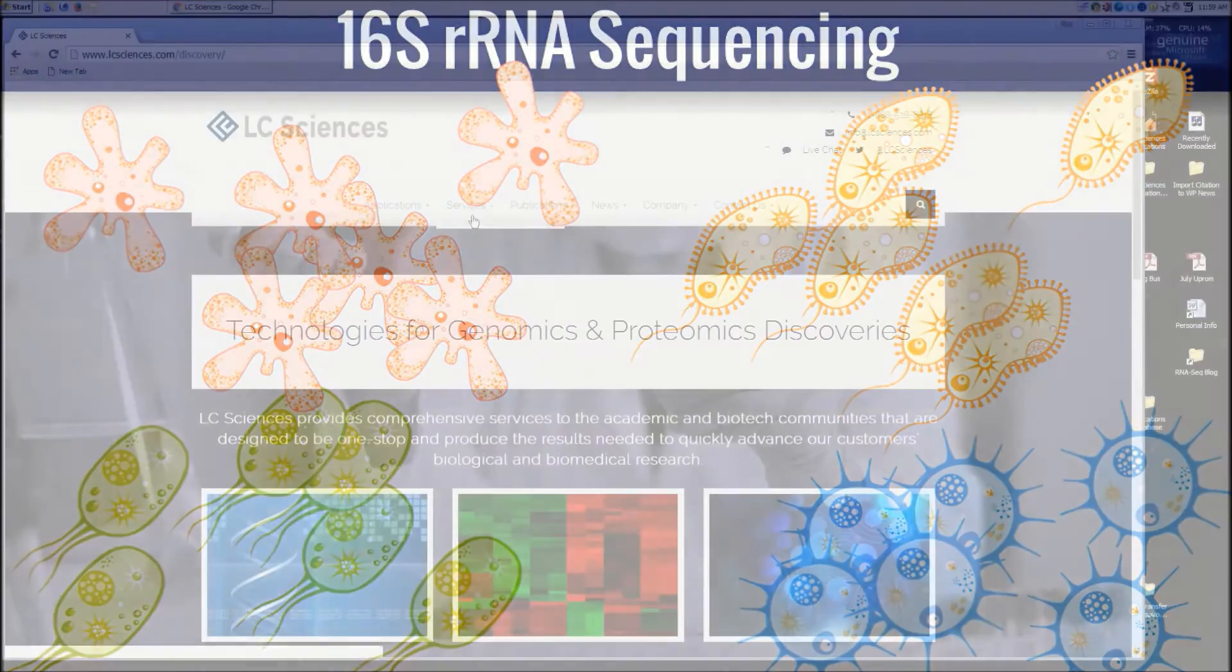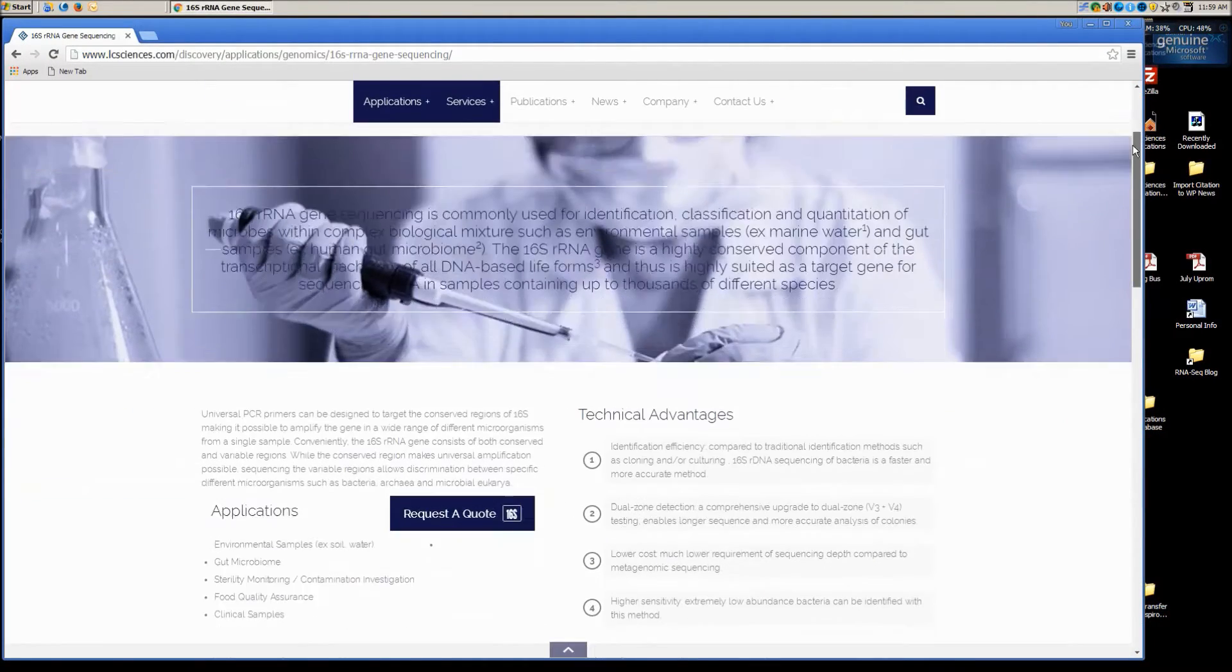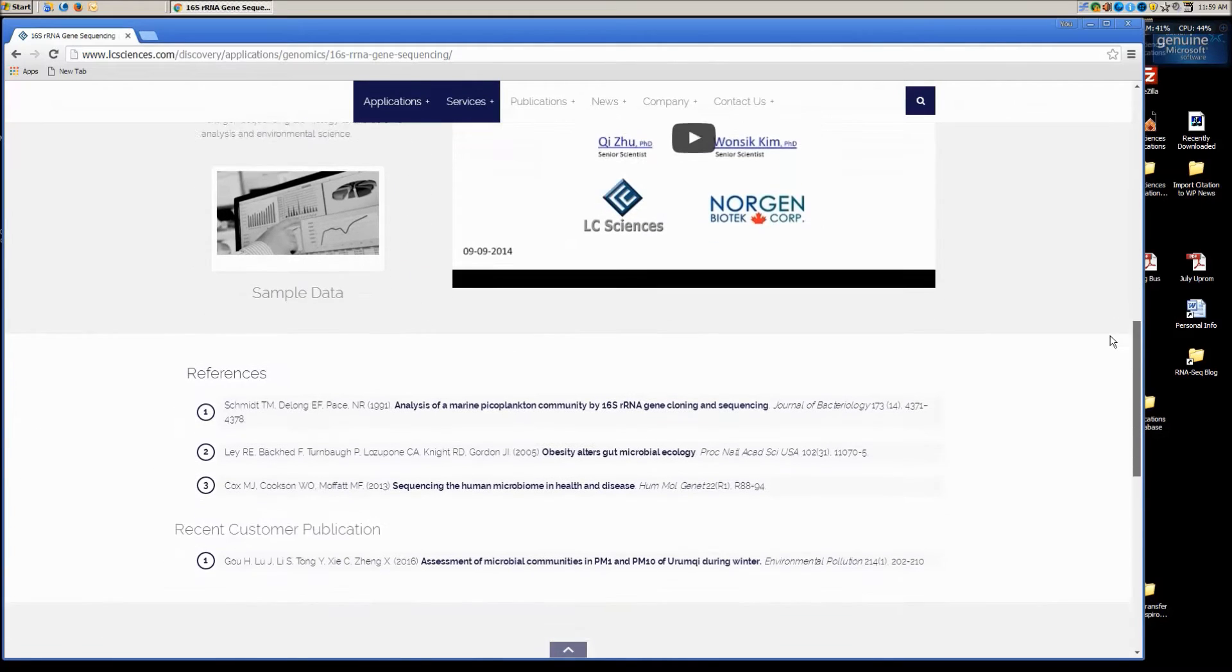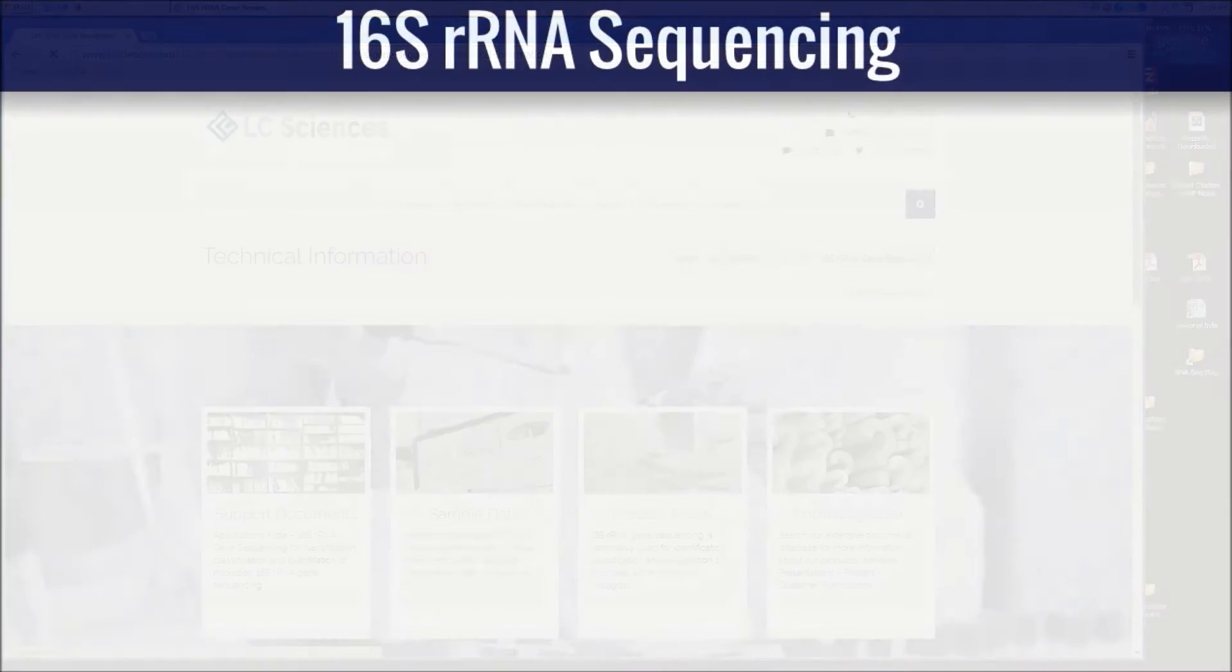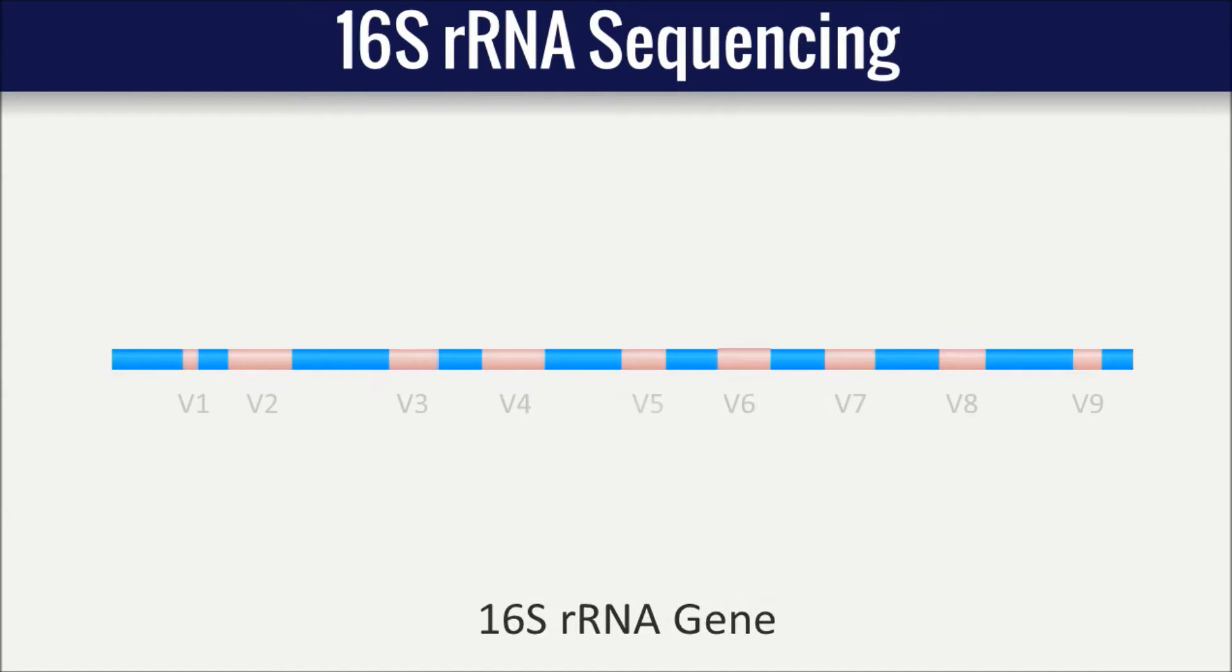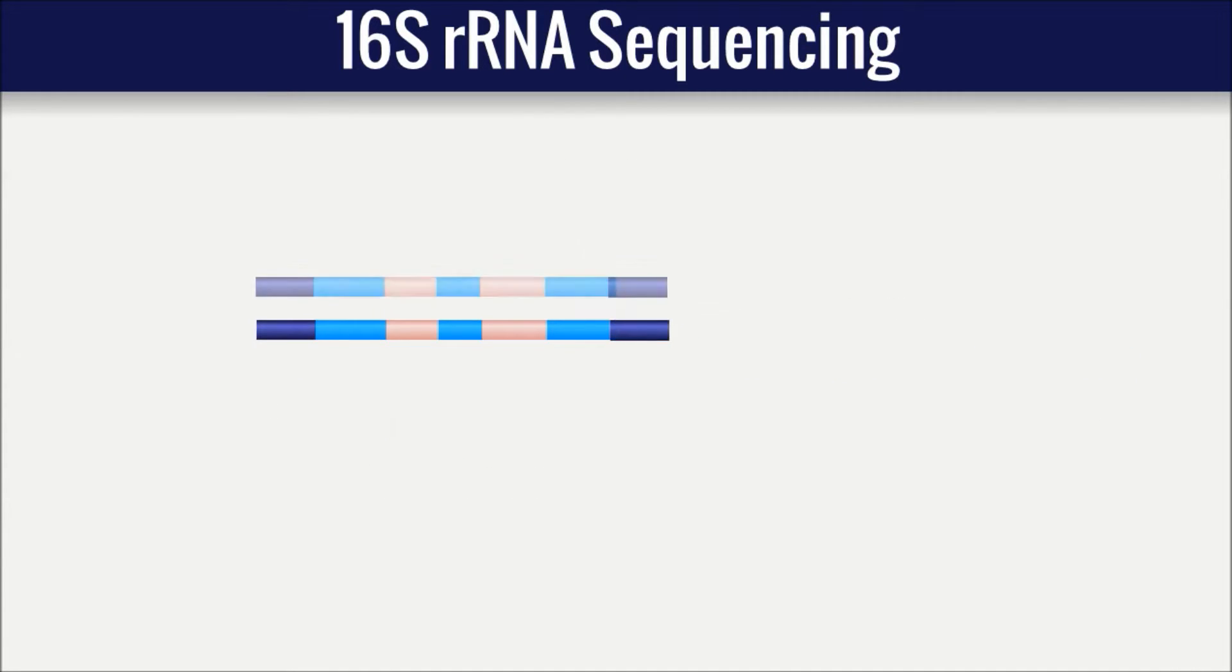LC Sciences offers a comprehensive 16S ribosomal RNA gene sequencing service for identification and classification of species in microbial samples. LC Sciences has developed a dual-zone amplification strategy targeting the V3 and V4 variable regions. Sample barcoding enables multiplexing of hundreds of different samples in a single sequencing run, keeping per sample costs low.